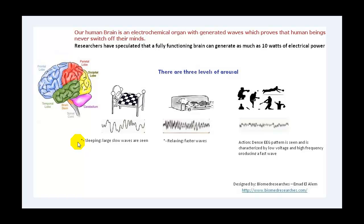This is our brain stem and this is the spinal cord. Researchers have speculated that a fully functioning brain can generate as much as 10 watts of electrical power. And as I said, this is only a speculation. There are three levels of arousal. The first level is called sleeping, the second one is relaxing, the third one is action.